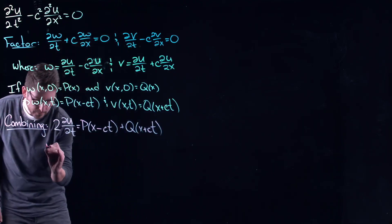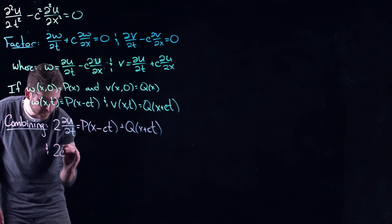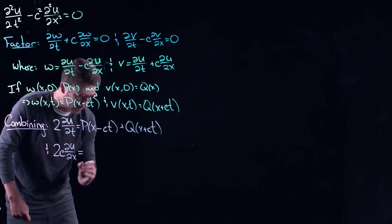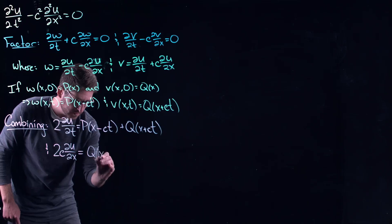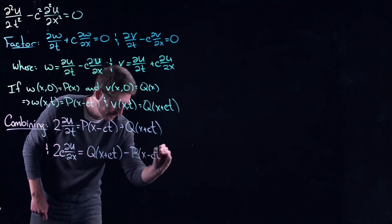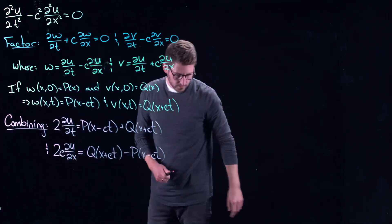Similarly, you get two c times the partial derivative with respect to x of u, which is going to be q of x plus ct minus p of x minus ct.